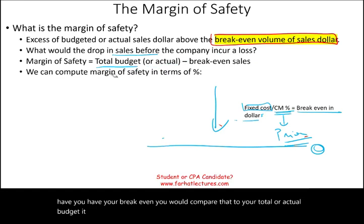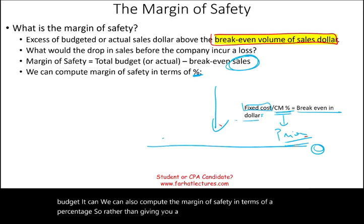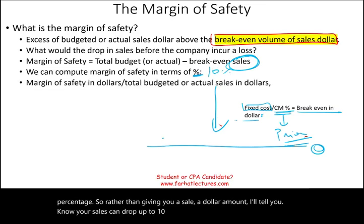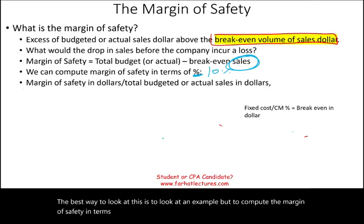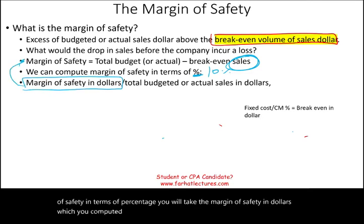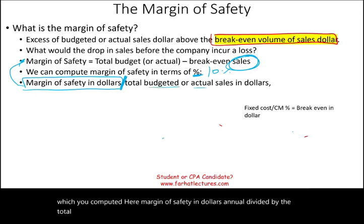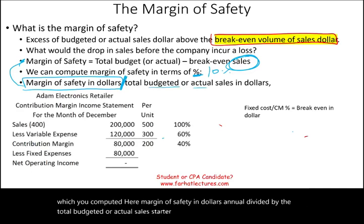We can also compute the margin of safety in terms of a percentage. So rather than giving you a dollar amount, I'll tell you your sales can drop up to 10%. To compute the margin of safety as a percentage, you will take the margin of safety in dollars and divide it by the total budgeted or actual sales dollar. It's a pretty straightforward concept.